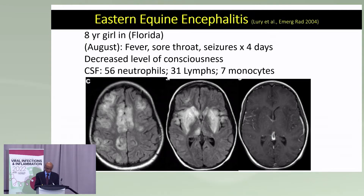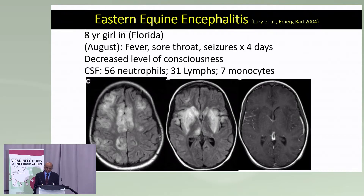Another arboviral infection — probably the most prominent of all — is eastern equine encephalitis. Just yesterday it was reported that there are at least nine cases of eastern equine encephalitis in Florida already. With the mosquito season and climate change, we are going to see more of these infections migrating northwards. You can see this child who was eight years of age with fulminant lesions in the basal ganglia and gray matter — these viruses love to target neuronal populations.